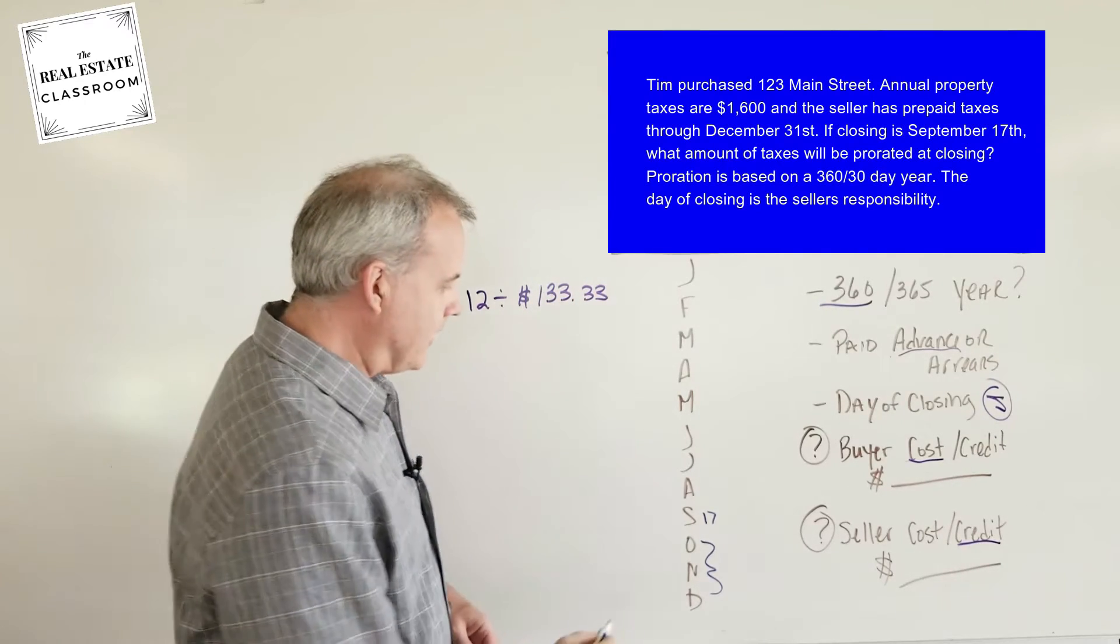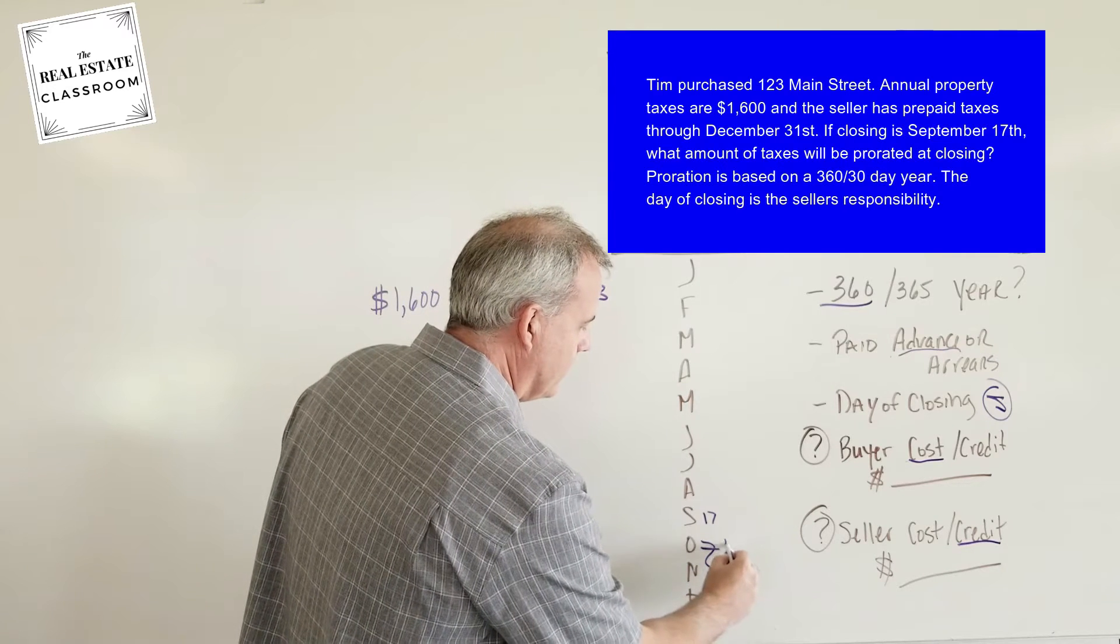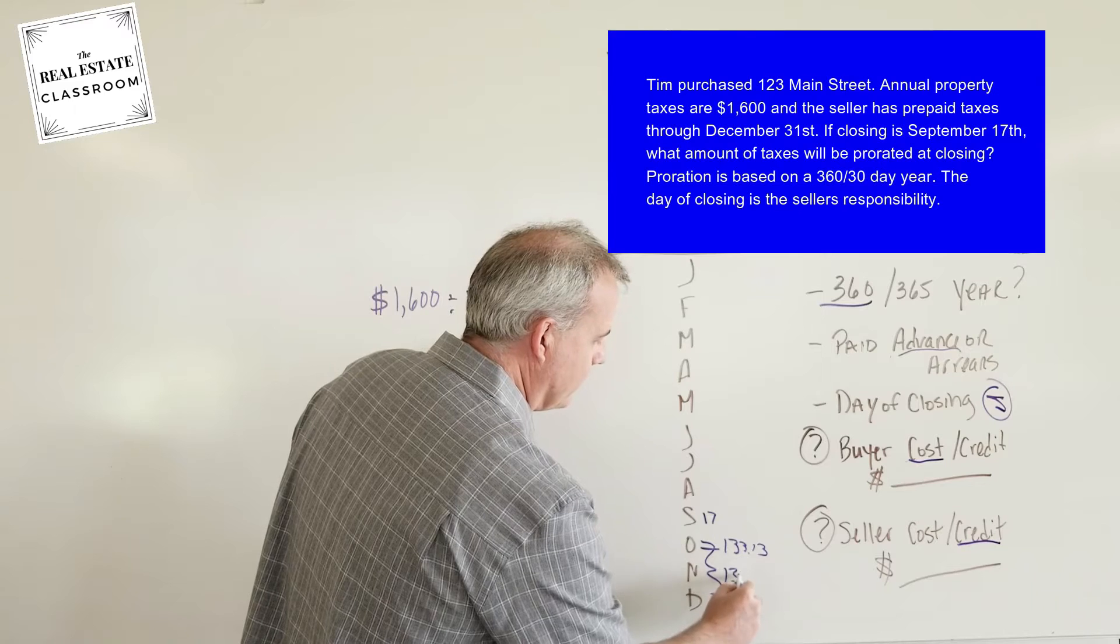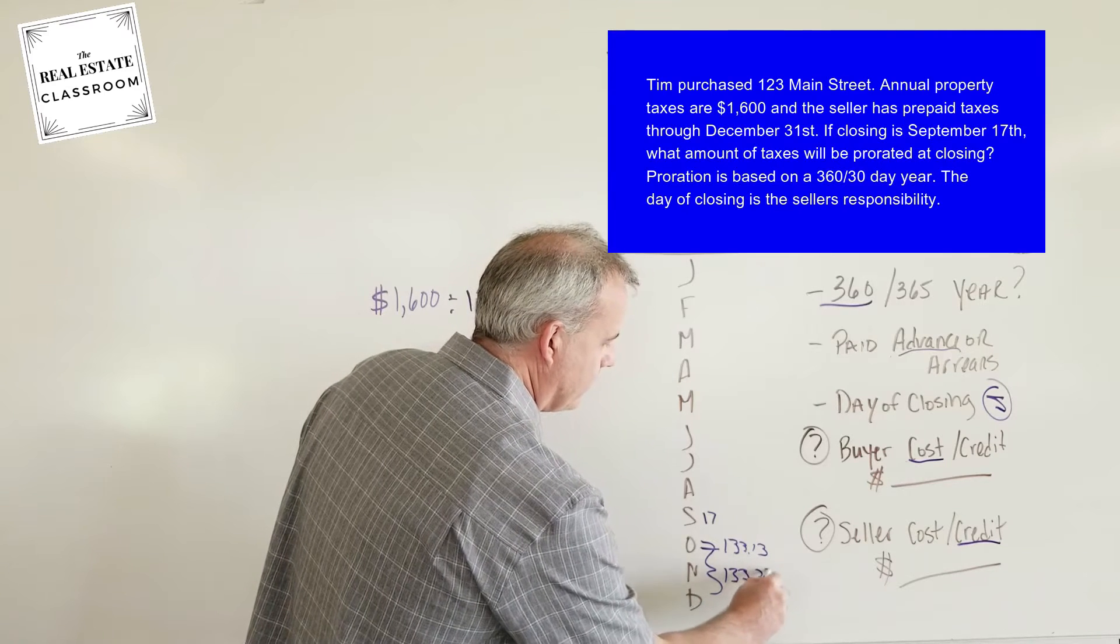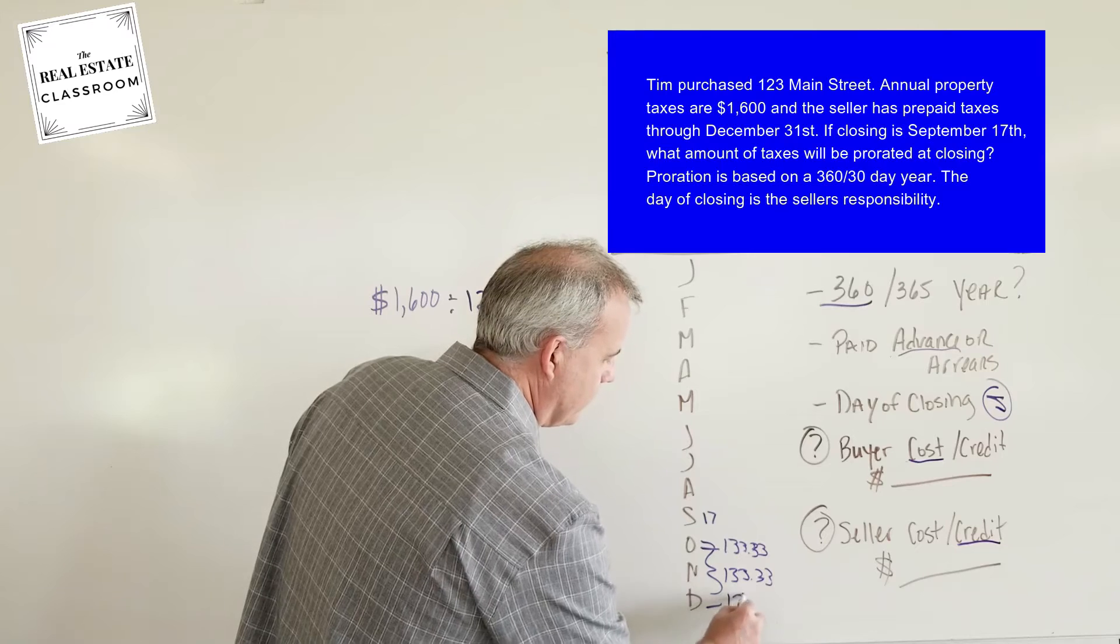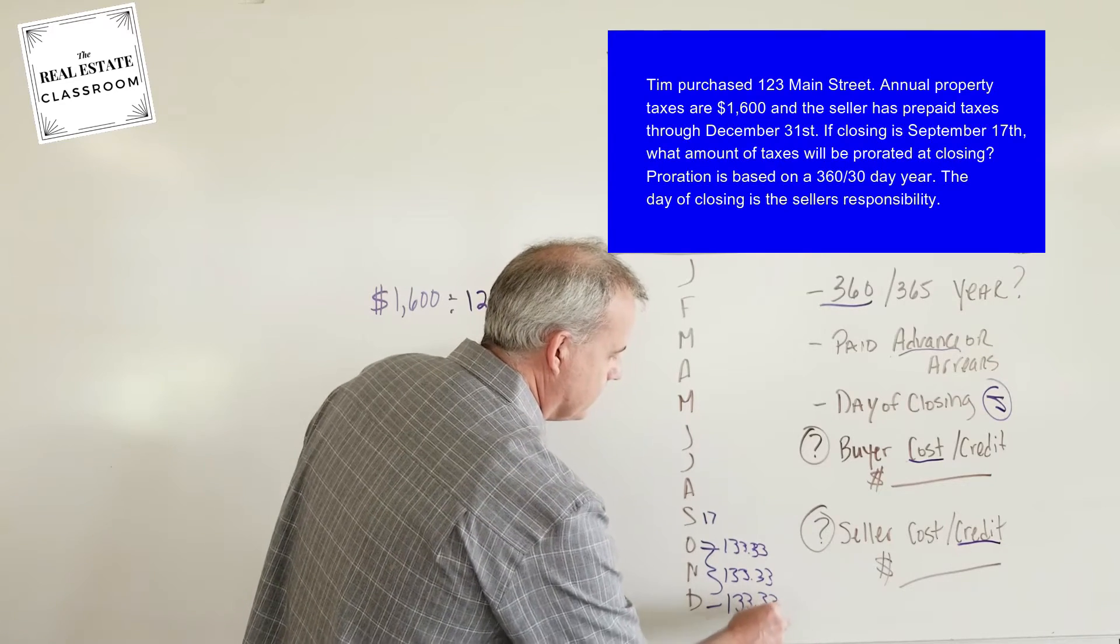So, going to our calendar here, we know that October, it's going to be $133.33. We know November is $133.33. Lots of threes there. And we know that December is $133.33.